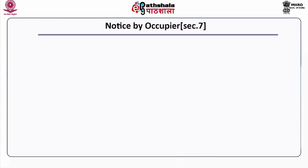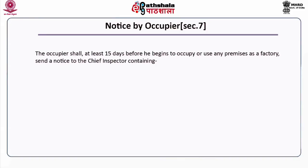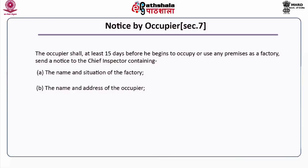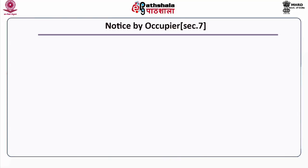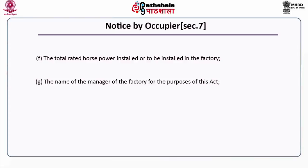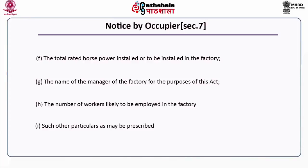Under Section 7, Notice by Occupier: the occupier shall, at least fifteen days before he begins to occupy or use any premises as a factory, send a notice to the chief inspector containing the name and situation of the factory, name and address of the occupier, name and address of the owner of the premises, address for communications, nature of the manufacturing process, total rated horsepower installed, name of the manager, number of workers likely to be employed, and such other particulars as may be prescribed.